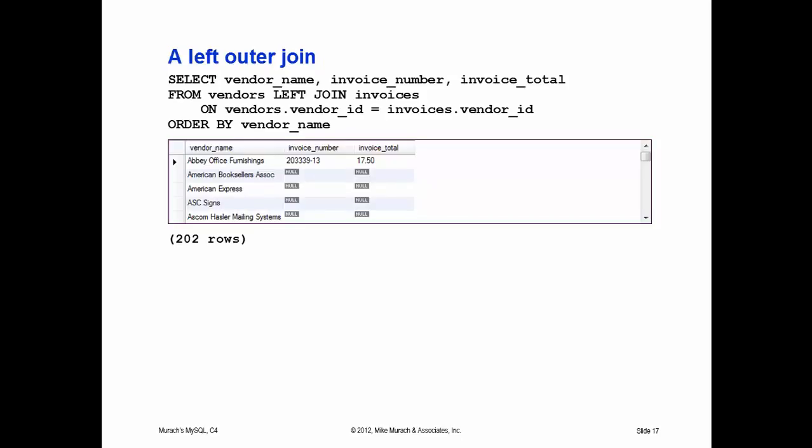Here's an example using vendors and invoices. Four of the five vendors shown on the screen do not have invoices. But it's saying: show me all vendors regardless of whether or not they have invoice numbers and invoice totals. If we didn't do this as an outer join, those vendors wouldn't be mentioned because they wouldn't have matches.